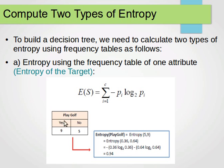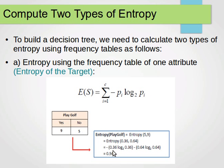Our target is to play golf, so we build a frequency table for the values of the class. We have 9 yeses and 5 noes, and then we compute the entropy using the summation of minus Pi log base 2 Pi. We have the minus there because log base 2 of a probability between 0 and 1 is always negative. Probability of yes is 9 over 14, probability of no is 5 over 14 — we plug those in and the result is 0.94.